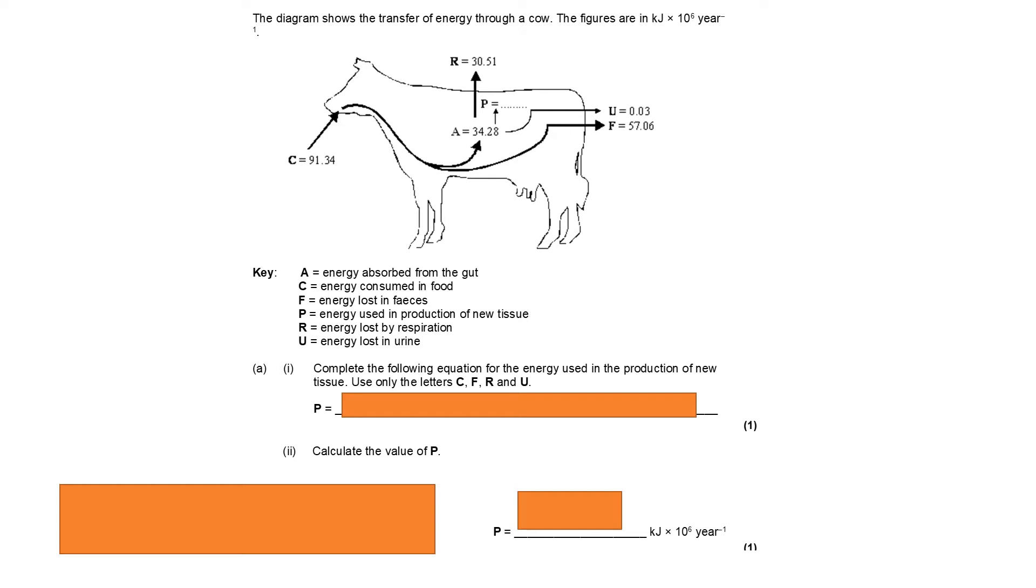And obviously P is what we're trying to calculate. So if we have a think about it, the energy that is going to be used to produce new tissue is going to be equal to the amount of energy taken in, which is C, minus any losses through the usual route. So we know that the losses are by respiration, urine, and feces production. So it's basically P equals C minus the sum of these three, R plus U plus F. Or we could just put C minus R minus U minus F.